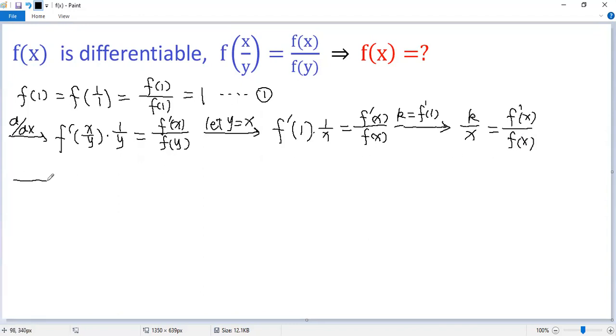Next, we integrate both sides. So the left side becomes k times ln x, the right side, ln f(x) plus constant c1.